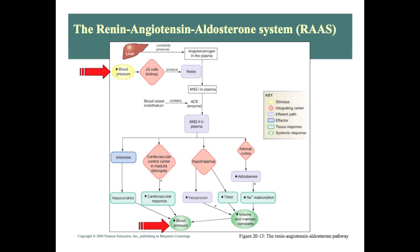At the adrenal cortex, angiotensin-2 increases aldosterone release — that's why we call this the renin-angiotensin-aldosterone system, because this is very important. Aldosterone increases sodium reabsorption, which increases volume and maintains osmolarity. This plays a big role in our kidneys and therefore increases blood pressure.